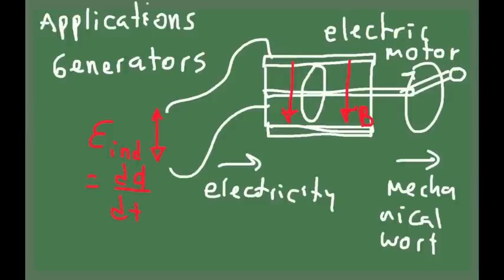The EMF induced, which is equal to dΦ/dt, will show up at the output. You can connect a light bulb there to produce light, or connect another electric motor — cranking one motor would make the other motor move. Whatever you want to do with this difference in potential. So operating an electric motor in reverse, you input mechanical work and get out electric power.